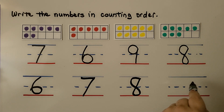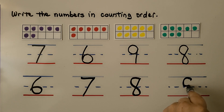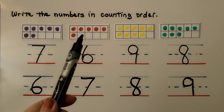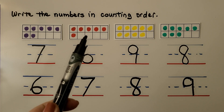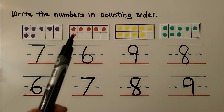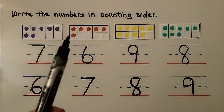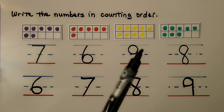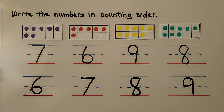This must be 9 — so we have 6, 7, 8, 9. Now they're in counting order. We start with the 10-frame that has the fewest dot counters, and each next number has 1 more dot: 7 is 1 more than 6, 8 is 1 more than 7, and 9 is 1 more than 8.